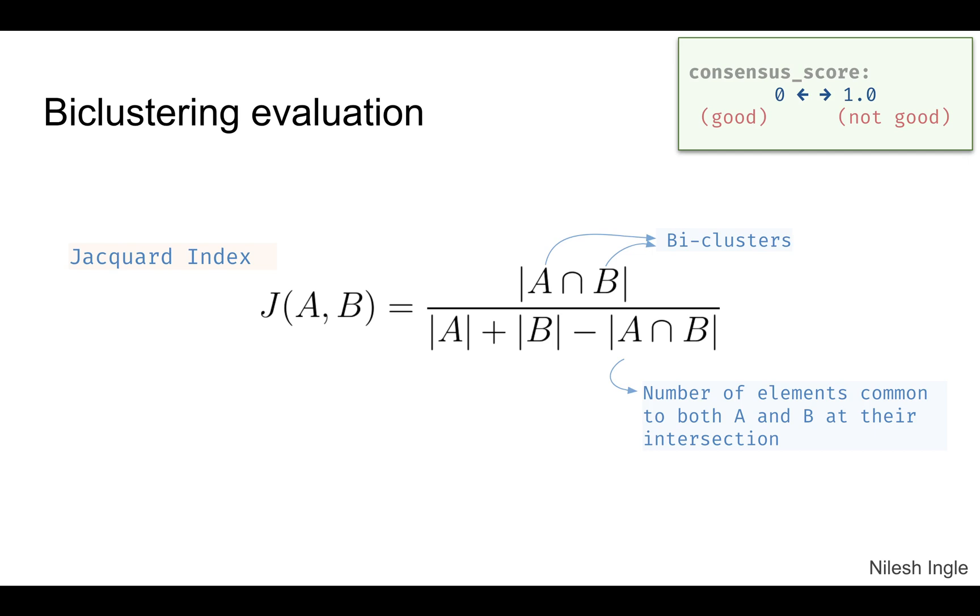For evaluation of the output of biclustering methods, there is one implementation of the Jaccard index. The code for that is consensus_score. The values lie between zero and one, zero being good—that is to say, the clusters are very well separated—and one being the clusters overlap completely. This is the general formula used: in the numerator you have biclusters A and B, the number of data points that are common in both clusters at the intersection, divided by this denominator term.